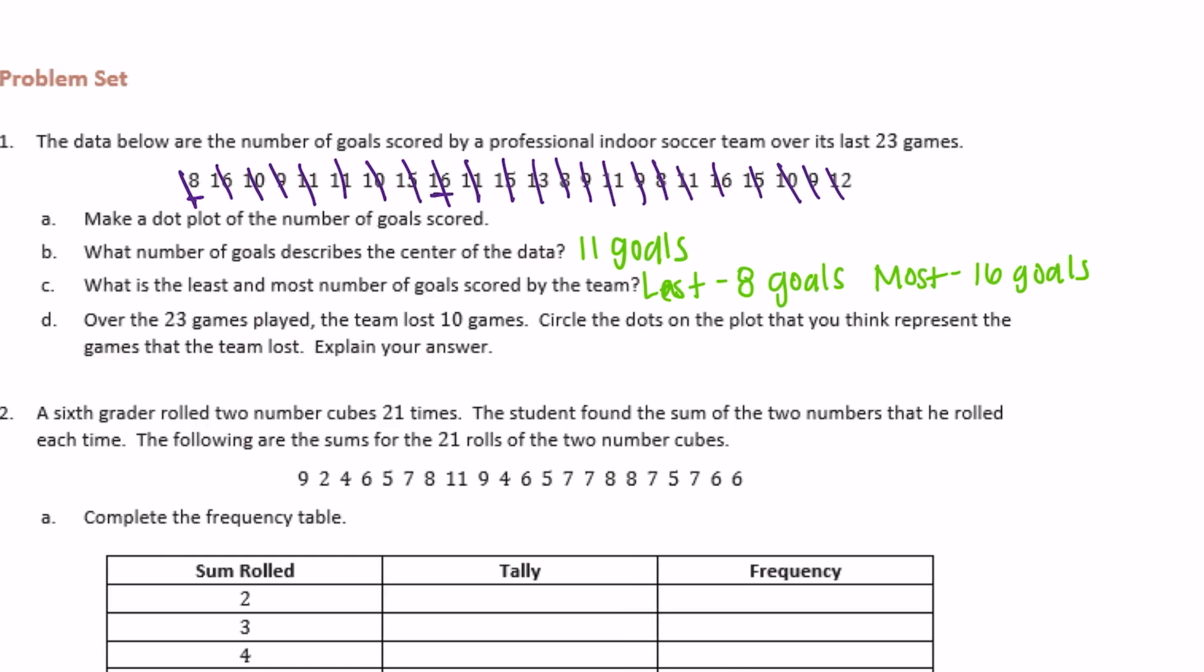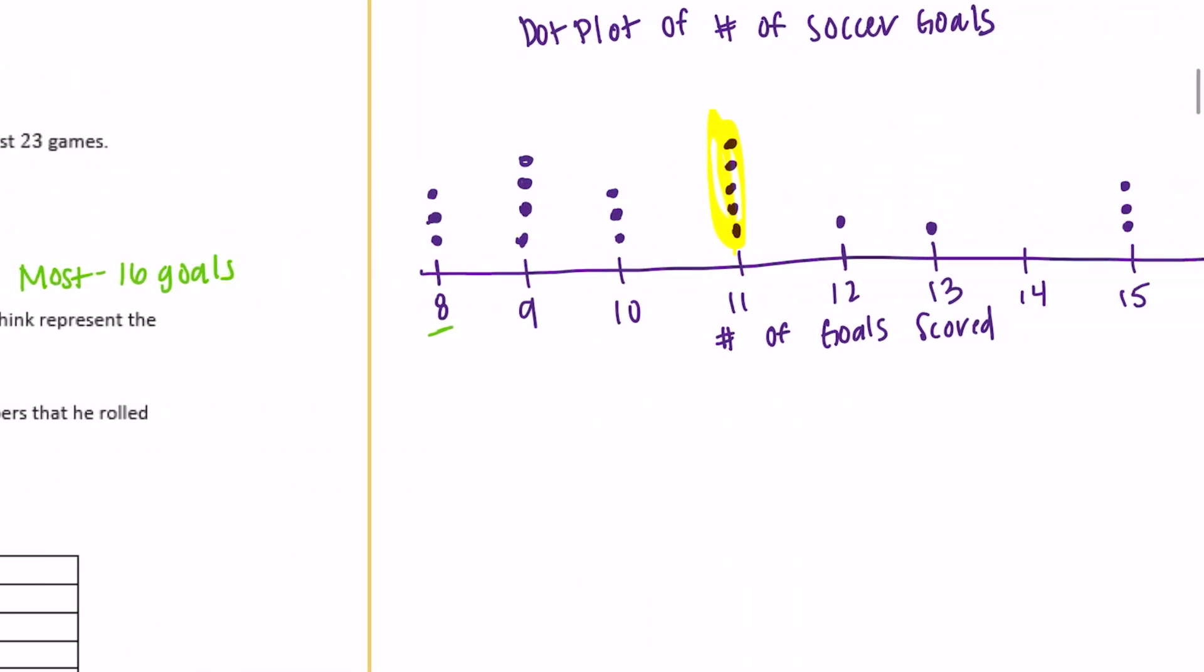D, over the 23 games played, the team lost 10 games. Circle the dot plots on the plot that you think represent the games that the team lost. Explain your answer. So if they lose a game, that probably means that they didn't score enough points. So I would pick for the ones that they lost, maybe there's 3, 4, 5, 6, 7, 8, 9, 10. So maybe they lost those games.